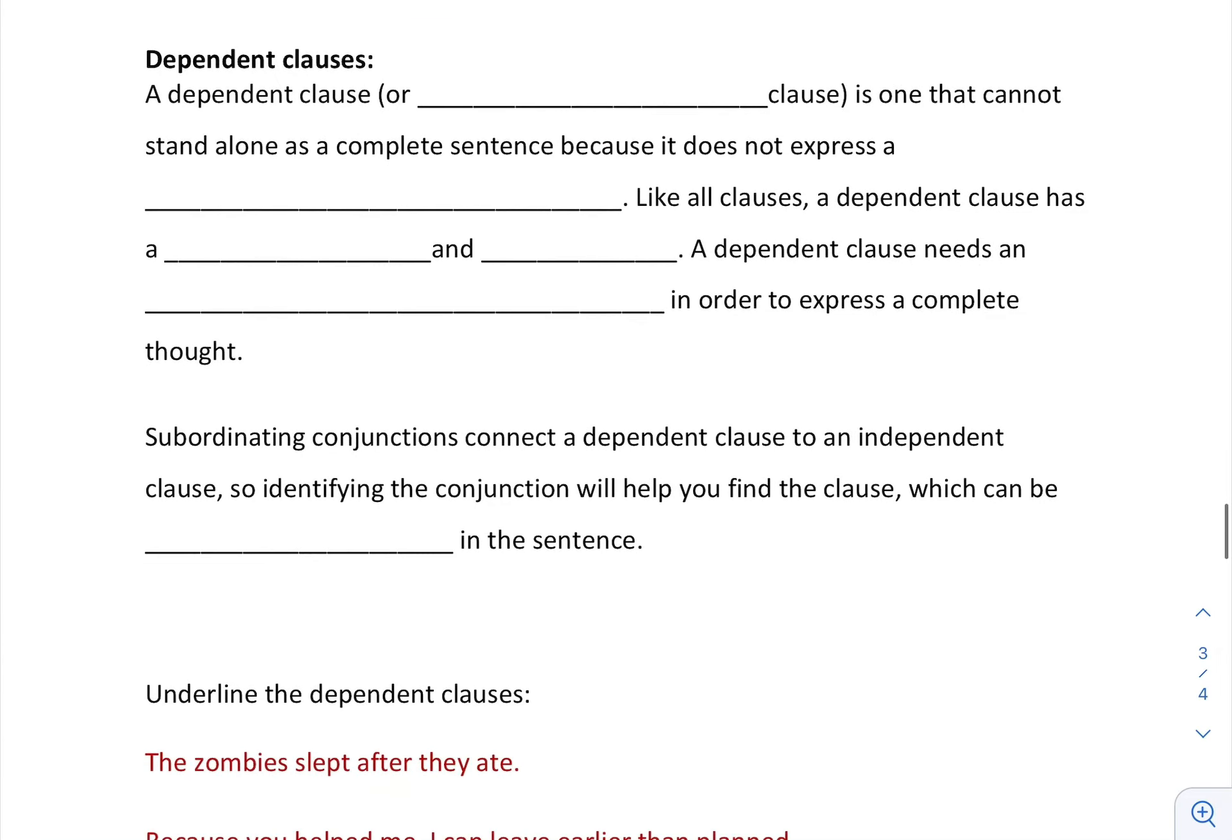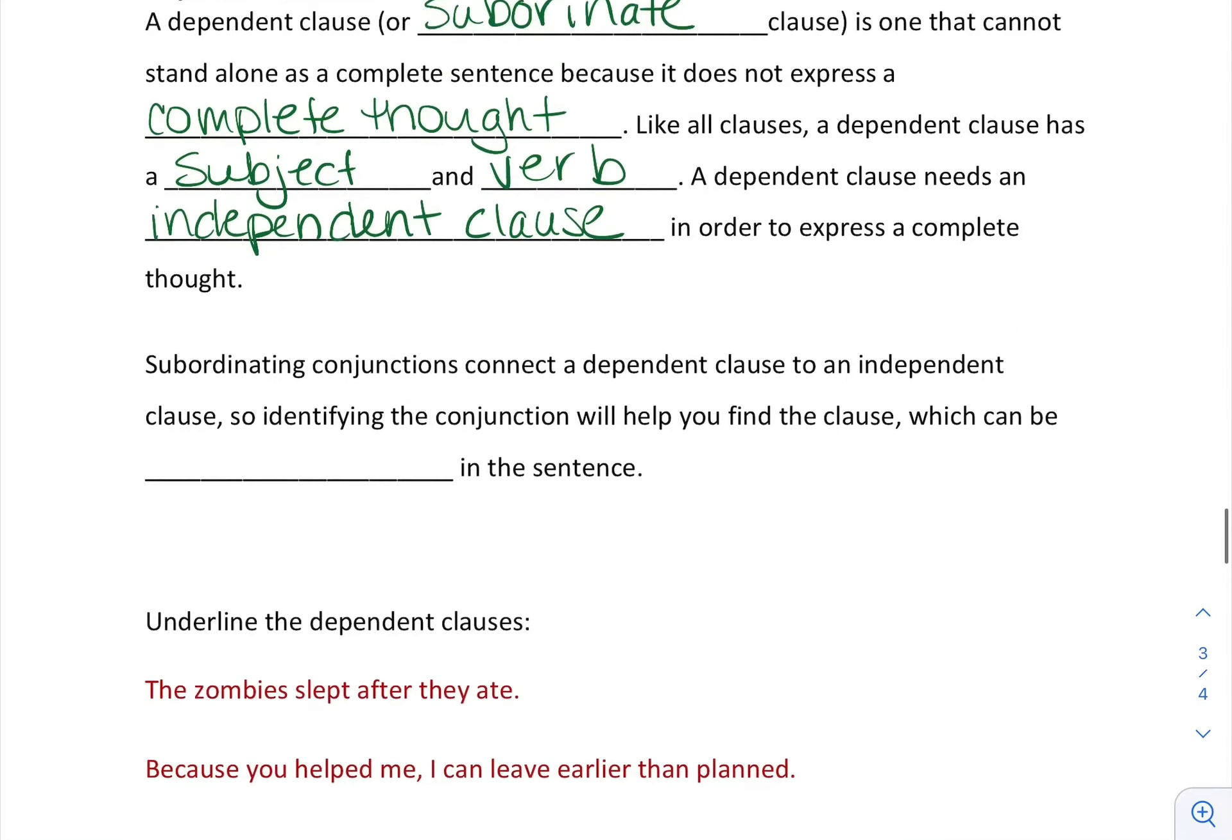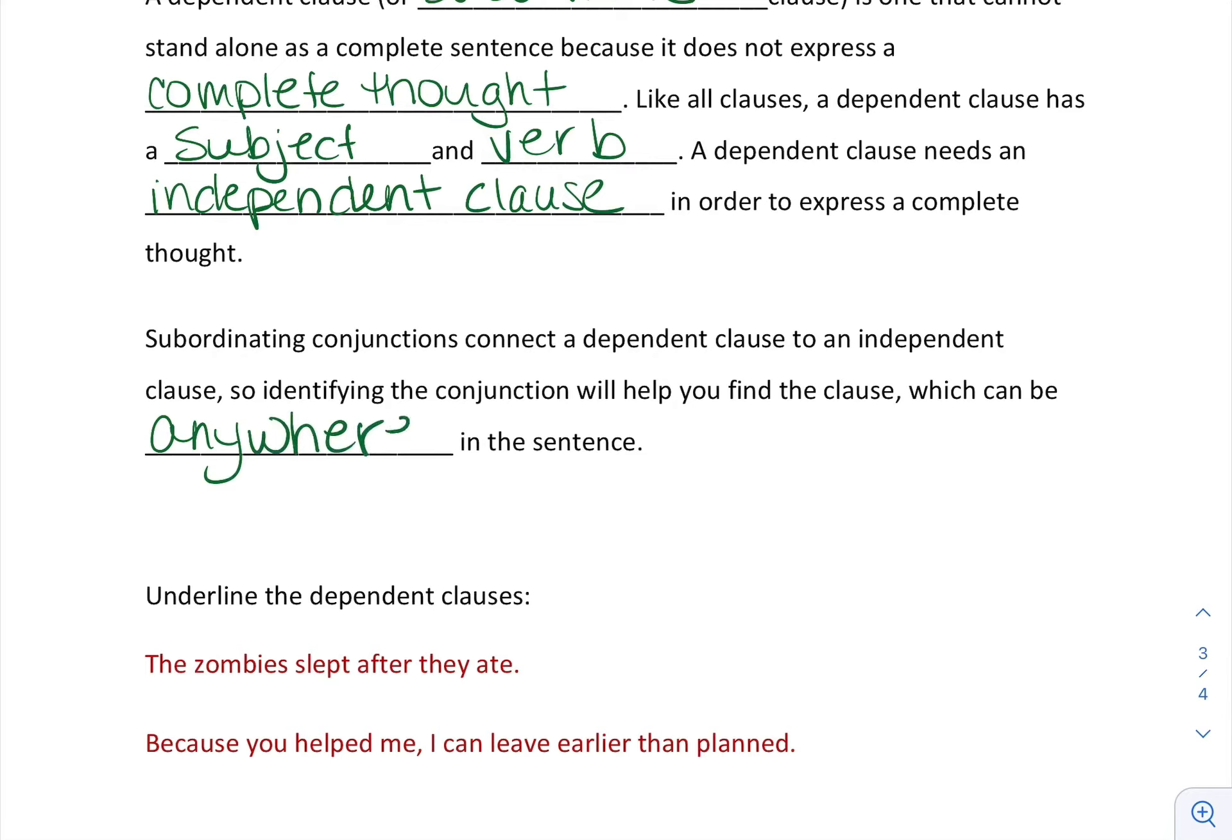Let's talk about dependent clauses. A dependent clause—if you've taken any sort of English grammar, you might recognize this—it's called a subordinate clause, is one that cannot stand alone because it does not express a complete thought. Like all clauses, a dependent clause has a subject and a verb. Just because it has a subject and a verb doesn't mean it expresses a complete thought. A dependent clause needs an independent clause in order to express a complete thought. Subordinating conjunctions connect a dependent clause to an independent clause, so identifying the conjunction will help you find the clause, which can be anywhere in the sentence.